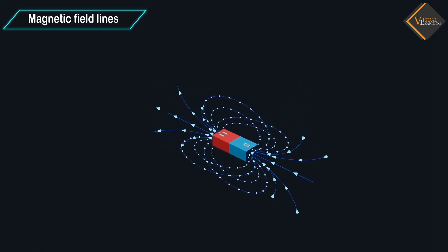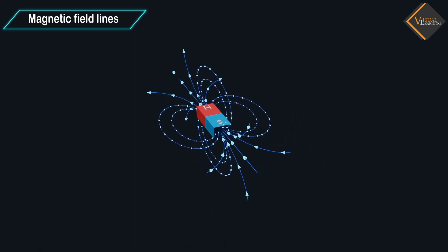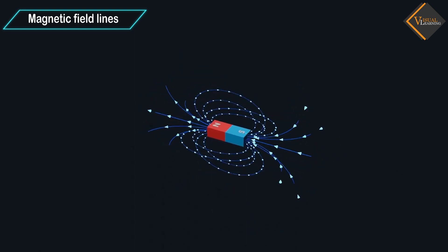Magnetic field lines depend upon magnet size and strength. Larger the magnet, more will be the magnetic field lines.